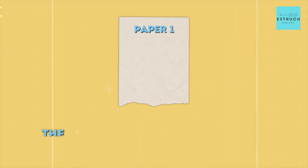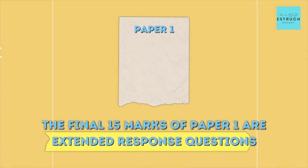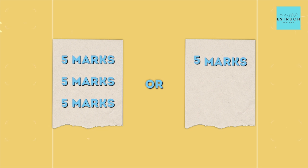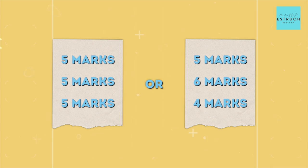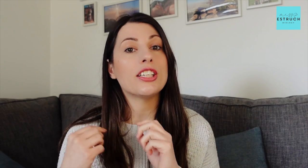I also want to point out some unique aspects of the individual papers. For Paper 1, the final 15 marks are extended response questions — normally three long answer questions, either five, five, five marks or five, six, four. For Paper 2, the final 15 marks is the comprehension, where they give you a block of text with numbered lines and ask you to use that information and your knowledge to answer questions — which means they're all application questions.